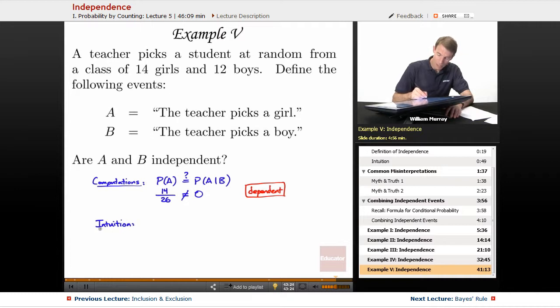So, the way to think about it intuitively here is, if you know that B is true, if you know that the teacher picked a boy, then you have some new information about whether A might be true. You have very strong new information about whether A might be true.